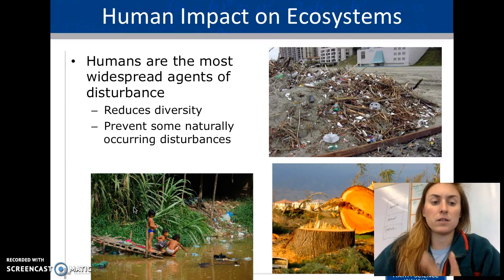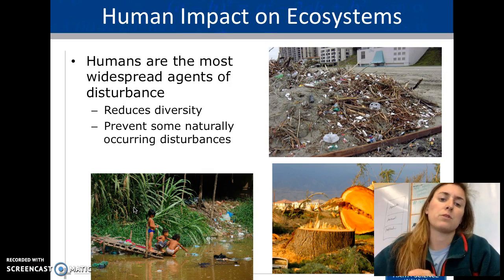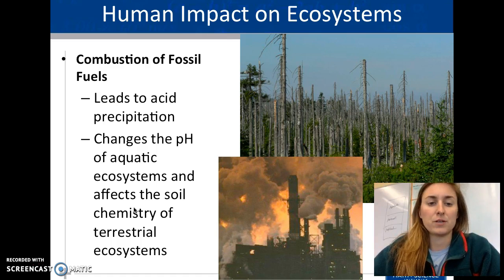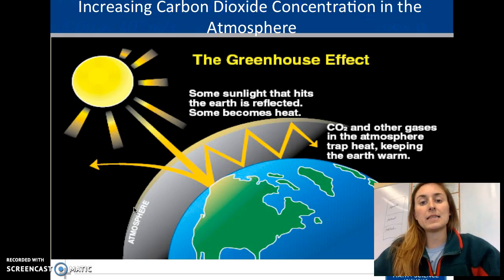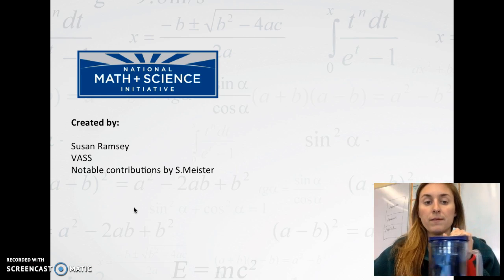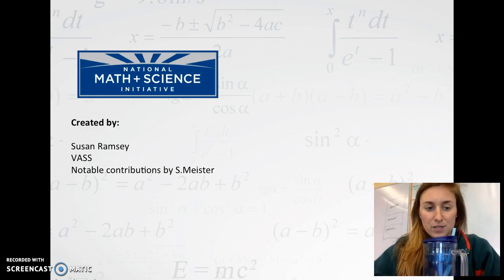The last thing to discuss is human impact on ecosystems. We reduce diversity, create pollution, disturb natural resources, introduce fossil fuels, change the pH of water, and cause acid rain. We also release so much carbon dioxide that we retain more heat in our atmosphere, creating the greenhouse effect and global warming. And that is it — we will move on to the next video.